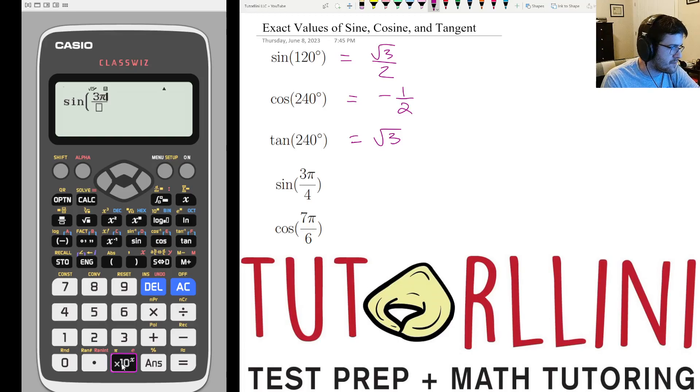above this times 10 to the x button. Now I press down to get to the bottom, and that gives me, I'm going to put 4, and then I press right, close my parenthesis, and sine of 3 pi over 4 is root 2 over 2.